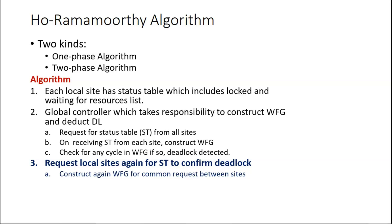On receiving the status table again, the controller will construct one more wait-for graph, but this time only for common requests. If there are any local requests, they will not be included in the wait-for graph. A local request means, for example, there is a resource held by site one itself and requested by a process of site one — that is a local cycle. If a cycle exists, then deadlock is confirmed.